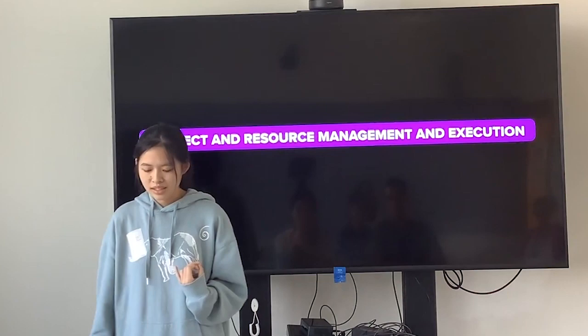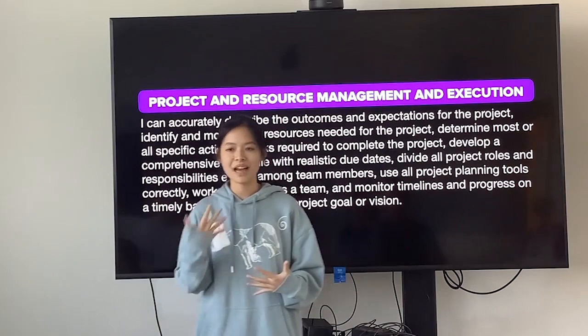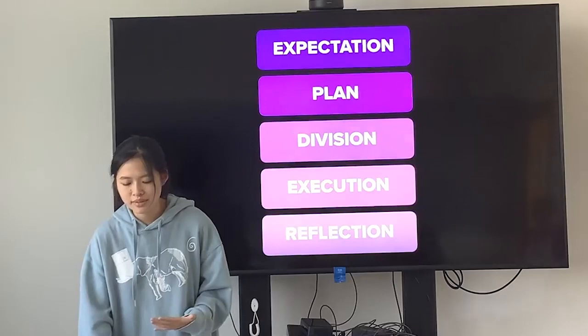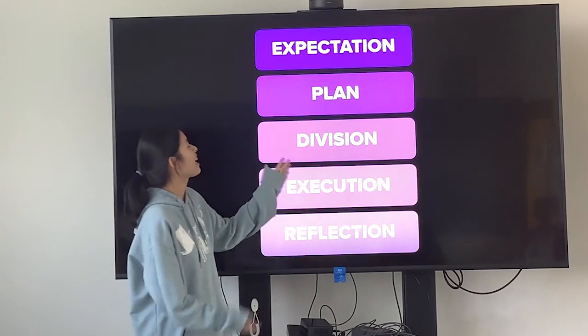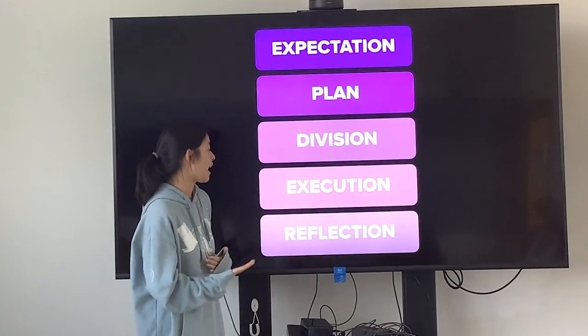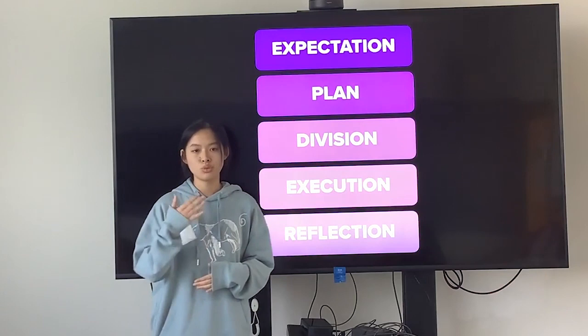The school gave a long sentence to explain what this MC is, but when I read it I abstracted five steps that I think the school wants us to do. They can be shown as a graph: first is expectation for the project, then a plan, then division of work, then execution, and finally reflection — which is not just a rubric but is really important because it helps me learn from previous experience.